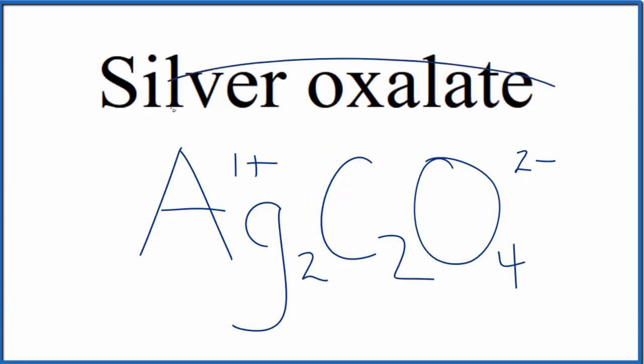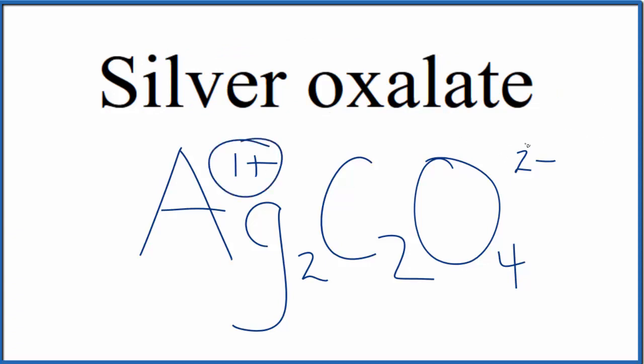That's because silver oxalate is a neutral compound, it doesn't say ion after it. And these charges, they need to add up to 0. 2 times 1 plus, that's 2 plus. That'll balance out the 2 minus, give us a net charge of 0.